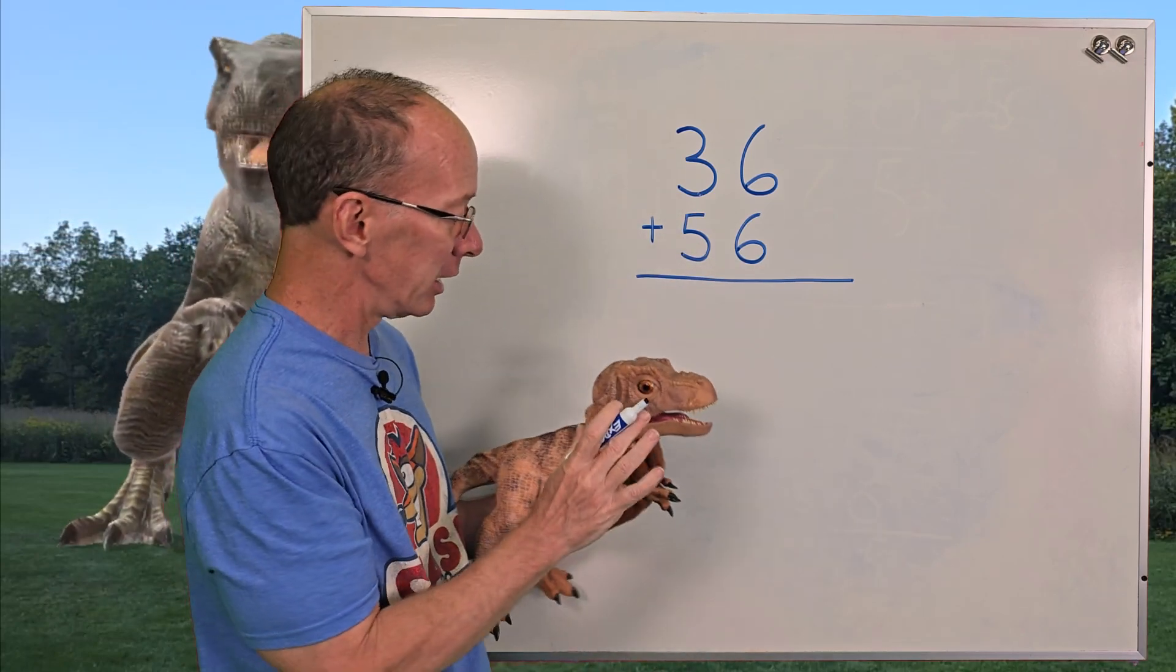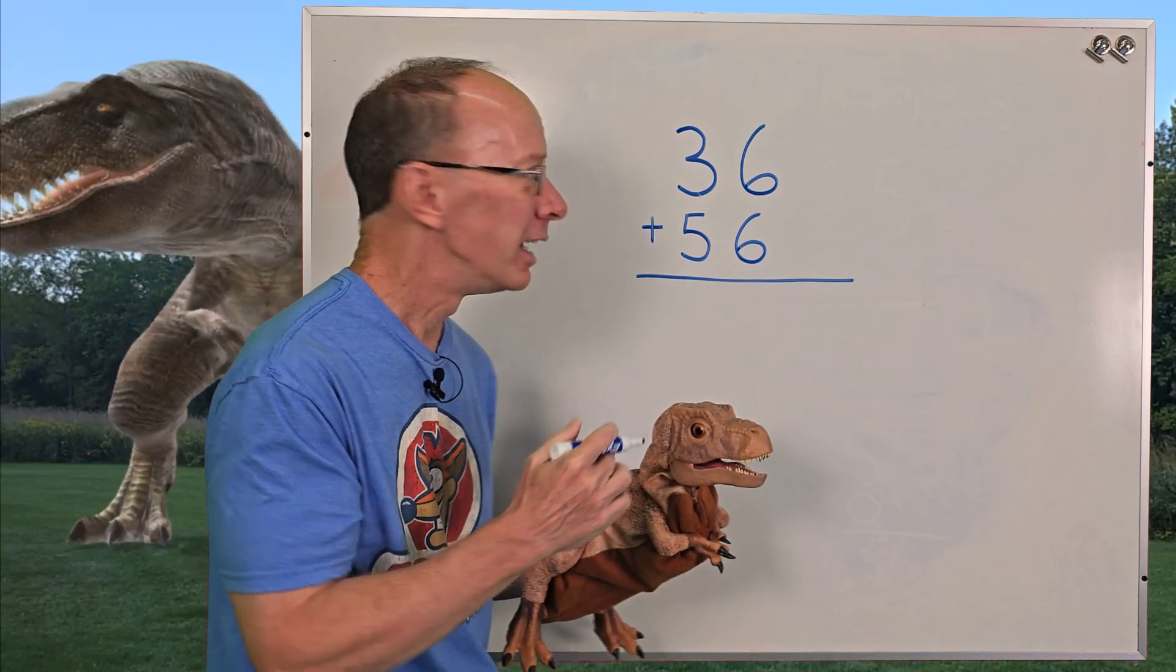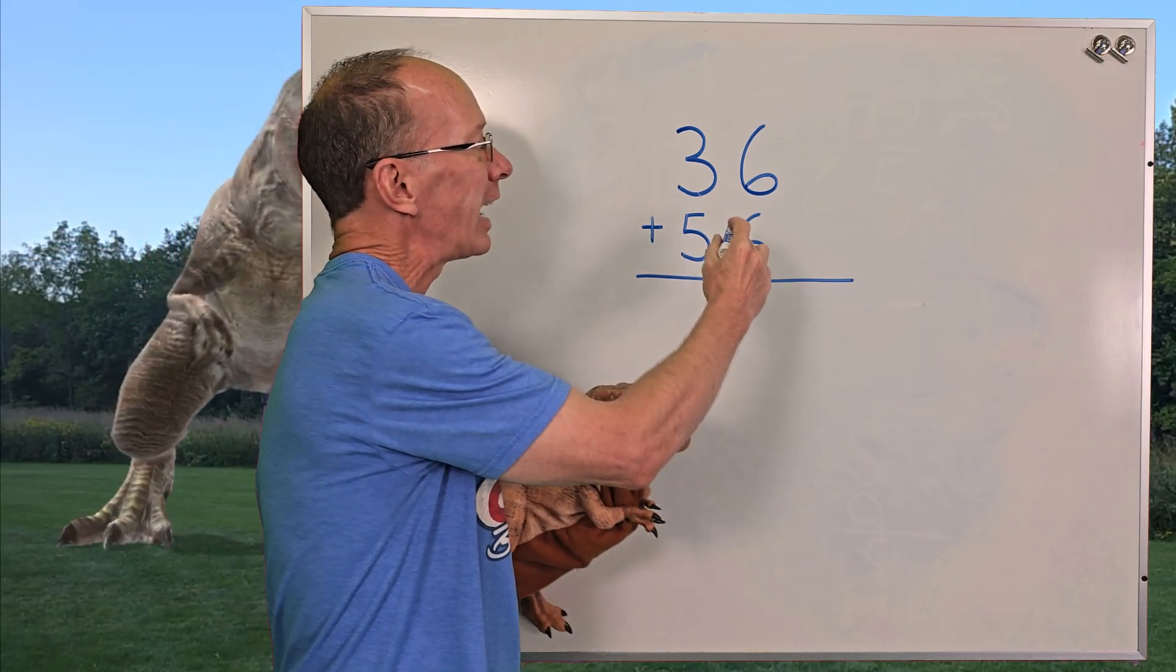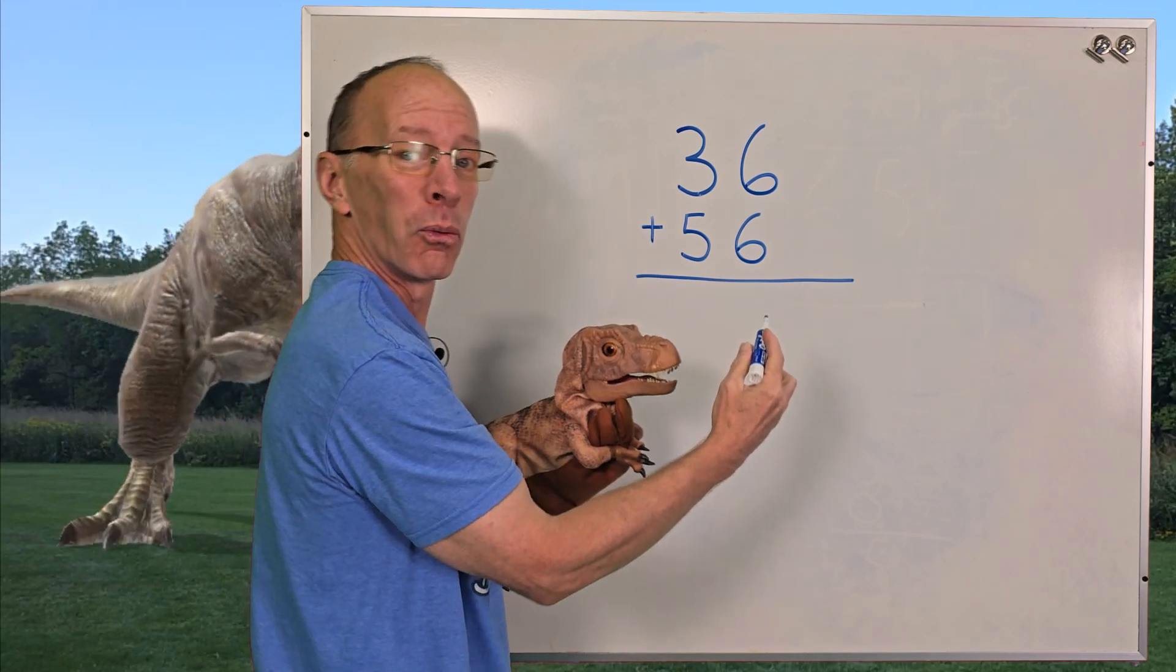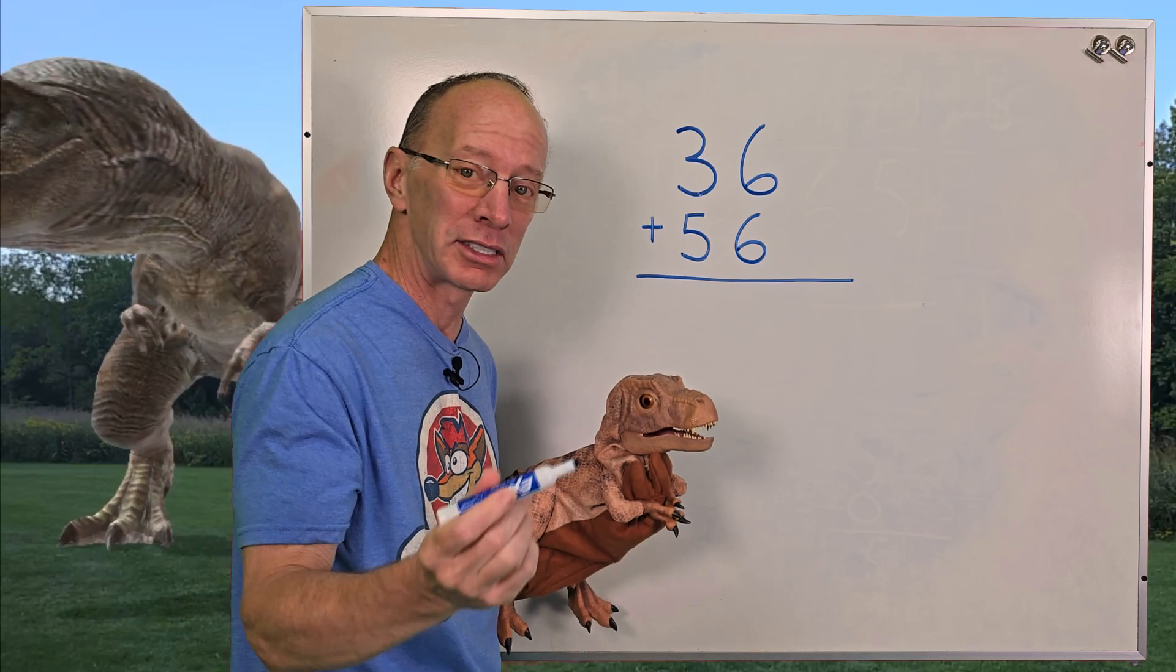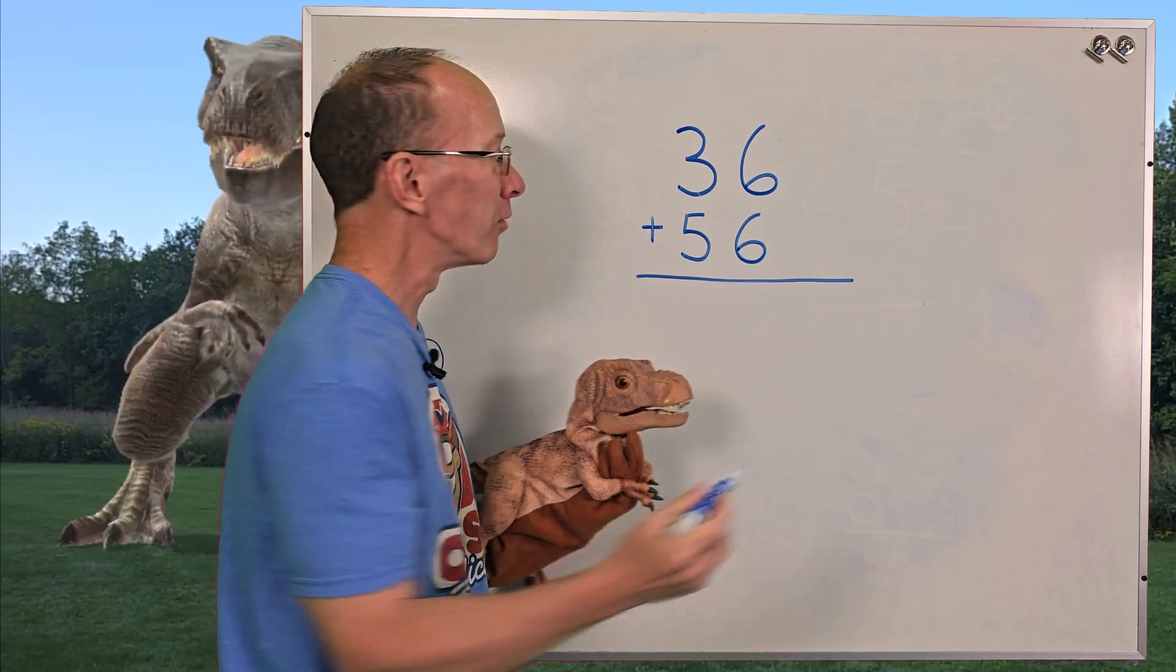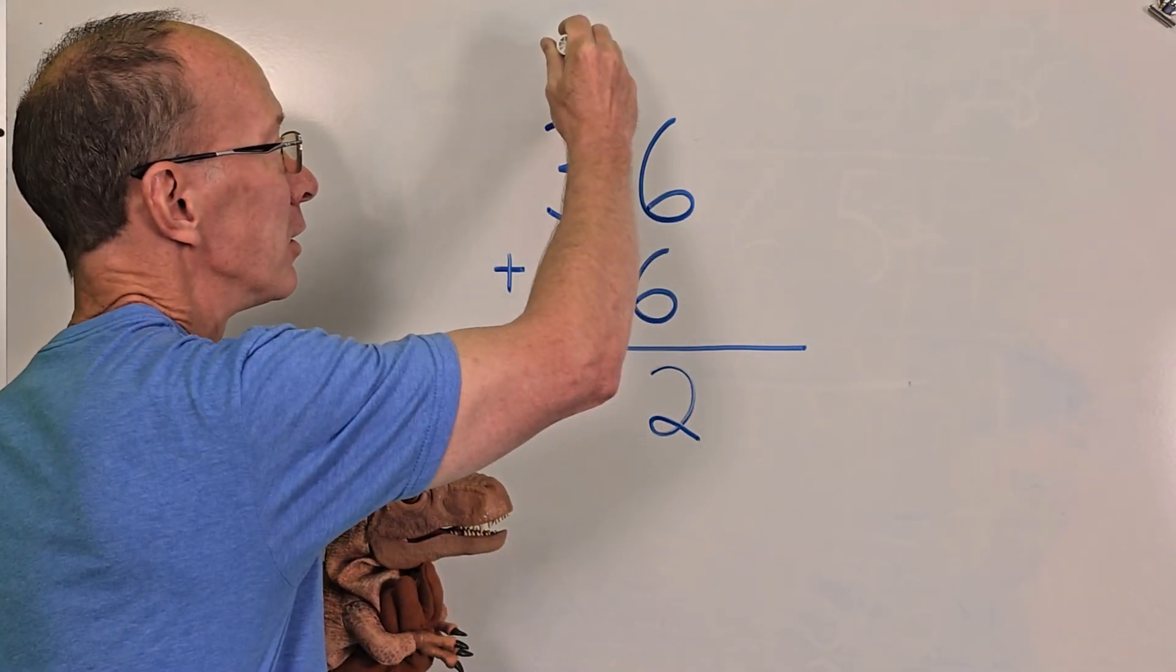Yeah, all right, I better feed this little T-rex after I do the problem here. So in order to do double digit addition, you want to always add the ones first. So I'm going to add 6 plus 6. You know what 6 plus 6 is? You do? What is it? 12, that's right.